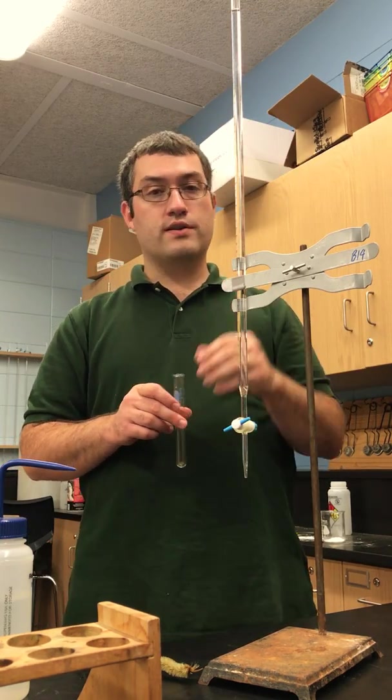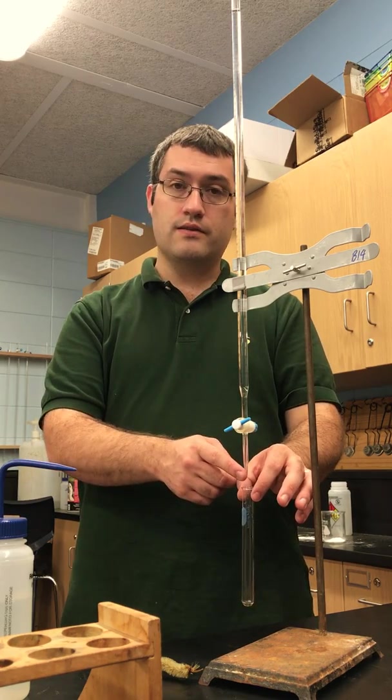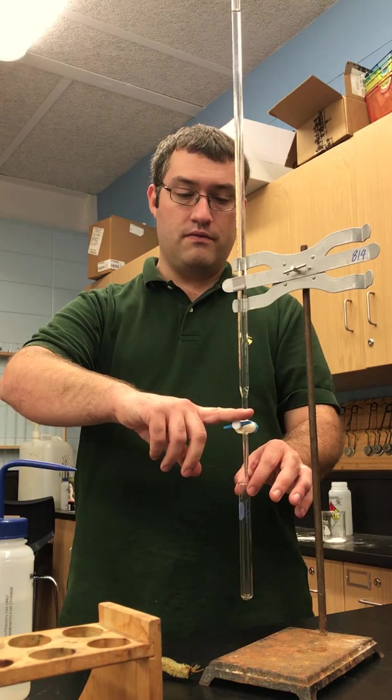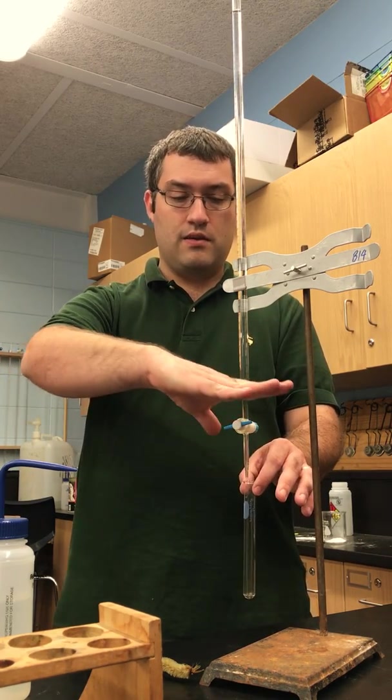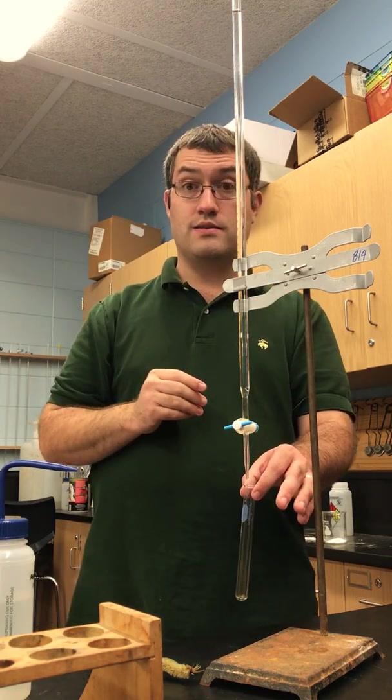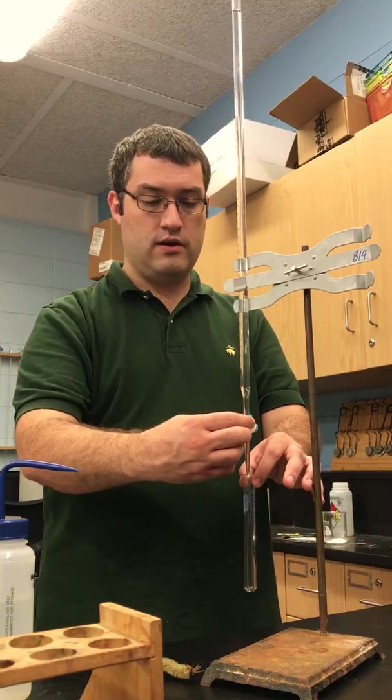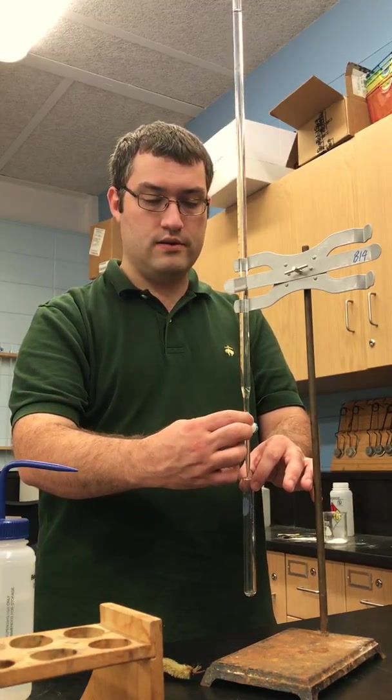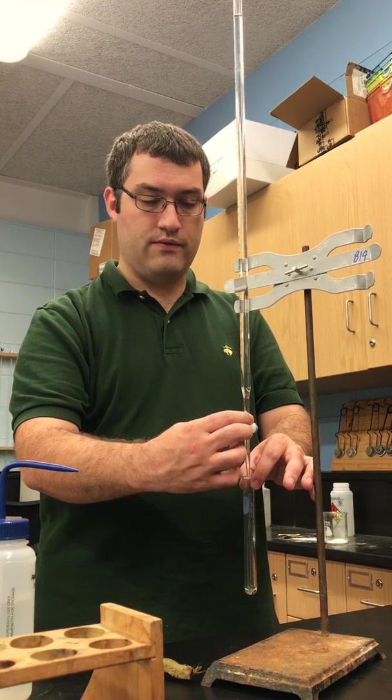The way the burette works is you're going to put the test tube just underneath the tip of this burette. Right now it's closed—the valve, in this case it's blue, some of them are orange or red—it's at a perpendicular position to the body of the burette, so that's closed. If I go ahead and open this valve by turning it slowly, I can get some dripping of the solution into my test tube, or eventually I will get a full stream.